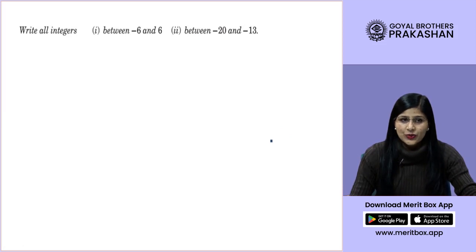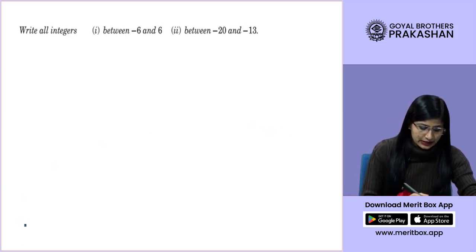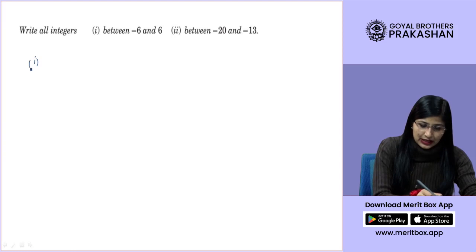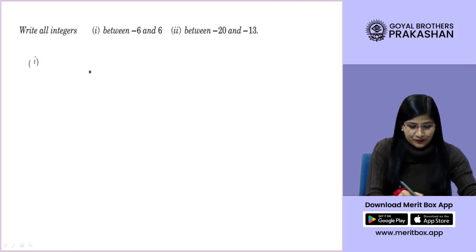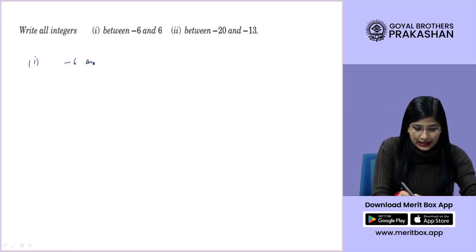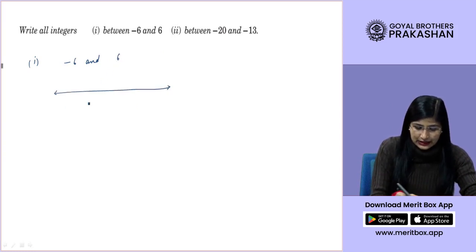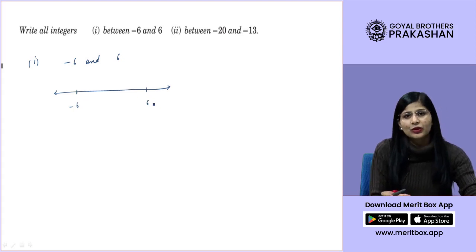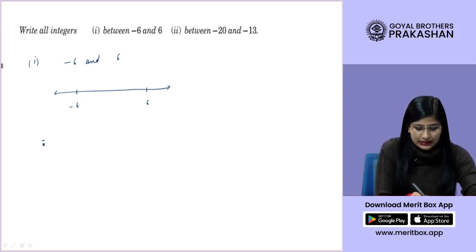Let us discuss this question. It says, write all integers first is between minus 6 and 6. So, on the number line, if I see minus 6 here and 6 here, you have to write all the integers that will lie in between.